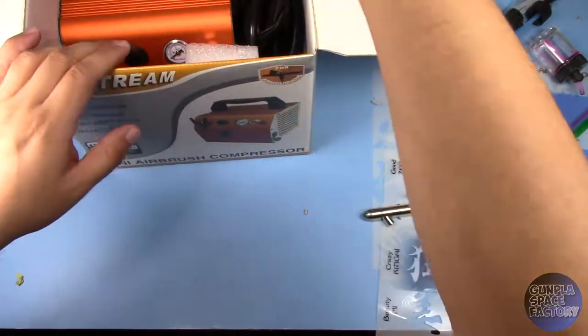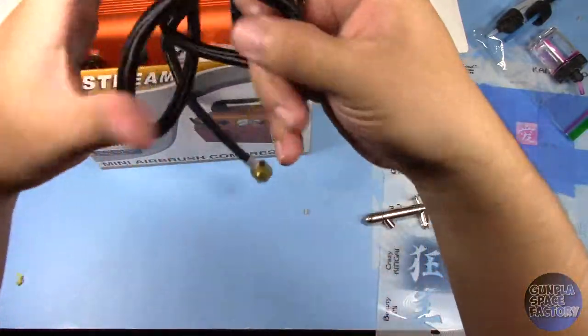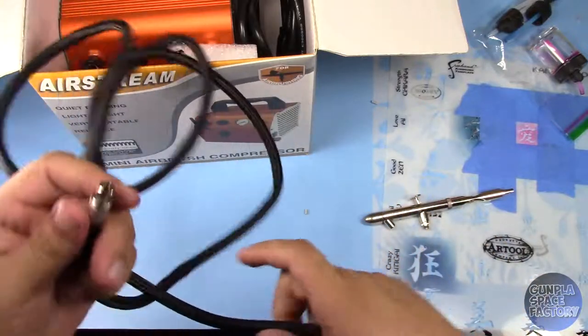And here we have a Badger air hose. It looks slightly kinked up but pretty much brand new. I mean there's hardly any wear on it.